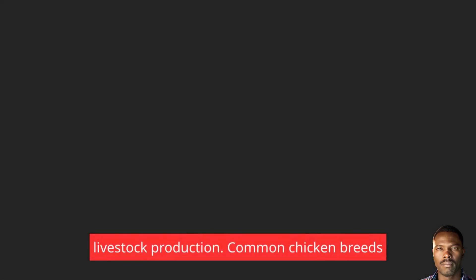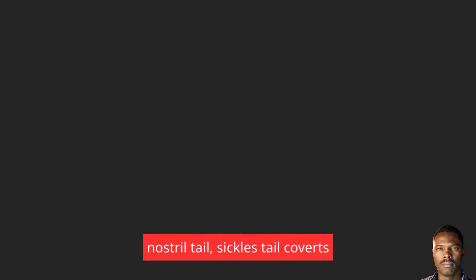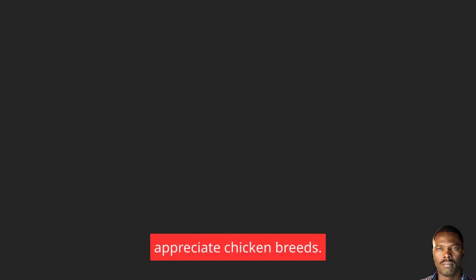Livestock production. Common chicken breeds. Study the parts of a chicken: comb, nostril, tail sickles, tail coverts, side hangers, saddle hackles, primary flights. Parts of a chicken — see video to appreciate chicken breeds.